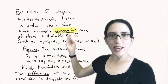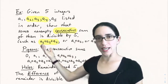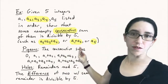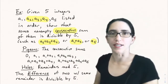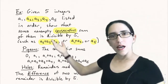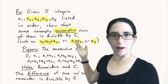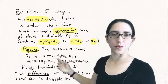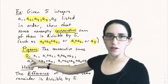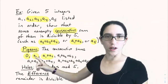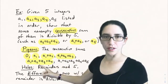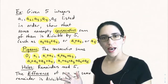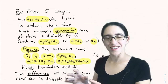We want to show that some non-empty consecutive sum of them is divisible by five. A consecutive sum means something like a2 plus a3 plus a4 — three numbers in a row added up — or a1 plus a2, or just a5 by itself. To show this, consider as pigeons the consecutive sums starting at the beginning: the empty sum zero, then a1, then a1 plus a2, then a1 plus a2 plus a3, continuing all the way up through a1 plus a2 plus a3 plus a4 plus a5. Those are six consecutive sums, and their differences are actually the consecutive sums we're looking for.